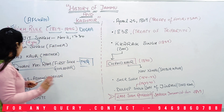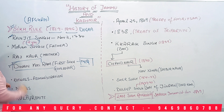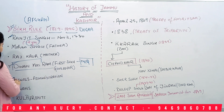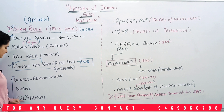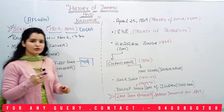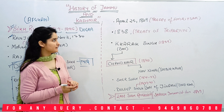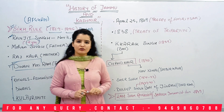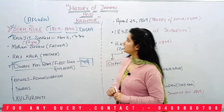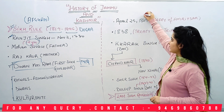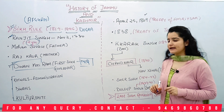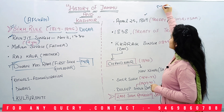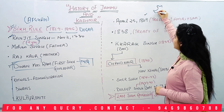Who was the first governor? And who was Raj Kaur? These are important MCQ points. Maharaja Ranjit Singh also signed the Treaty of Amritsar. This treaty of Amritsar was signed on April 25th, 1809.